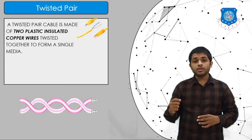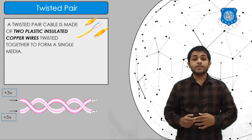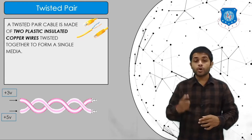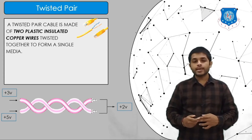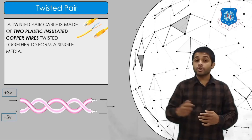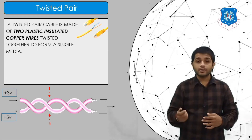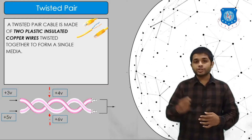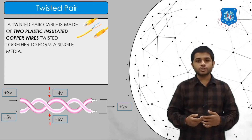In a twisted pair cable, the signal is the difference of the voltages on the two wires. For example, if the first cable carries 3 V and the second carries 5 V, the actual signal transmitted is the difference: 2 V. If noise adds 1 V to both — making them 4 V and 6 V — the difference still remains 2 V, so the noise has no effect on the transmitted signal.